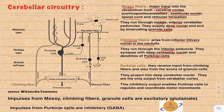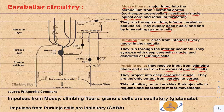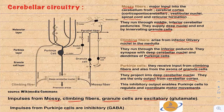Purkinje cells receive input from climbing fibers, and also from axons of granule cells after mossy fibers synapse with them. Purkinje cells project into the deep cerebellar nuclei and are the only outputs from the cerebellar cortex. Their inhibitory output enables Purkinje cells to regulate and coordinate motor movements. As a summary: impulses from mossy, climbing, and granule cells are excitatory; impulses from Purkinje cells are inhibitory, through GABA.